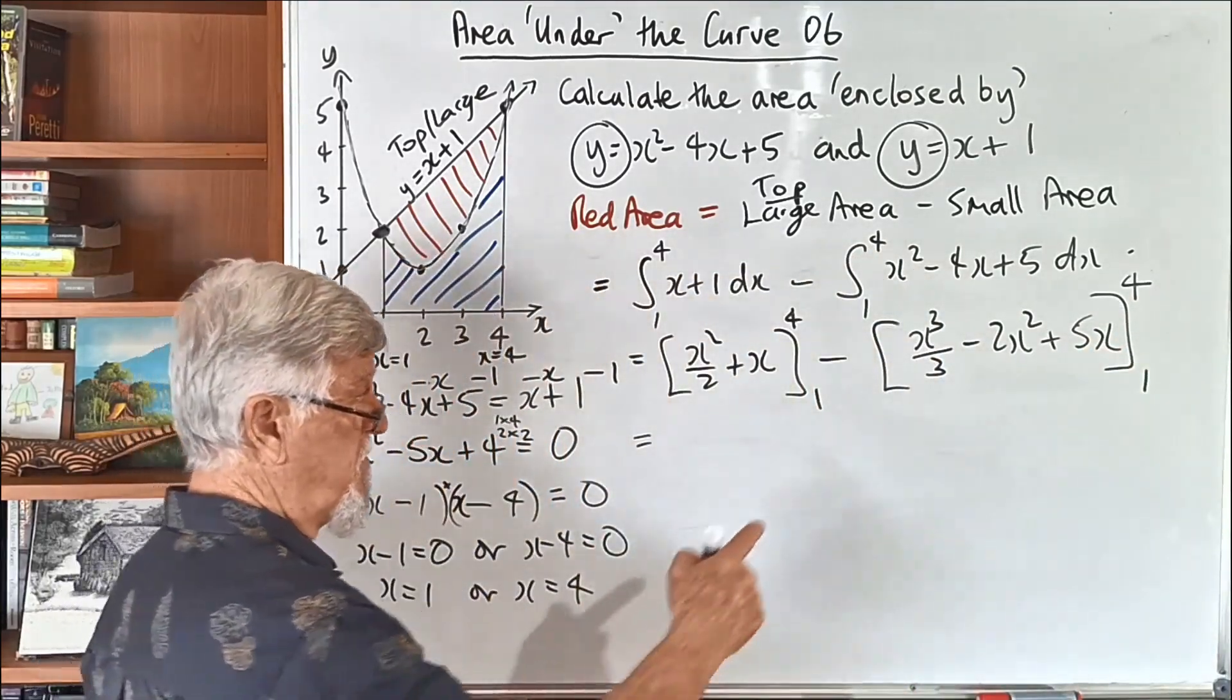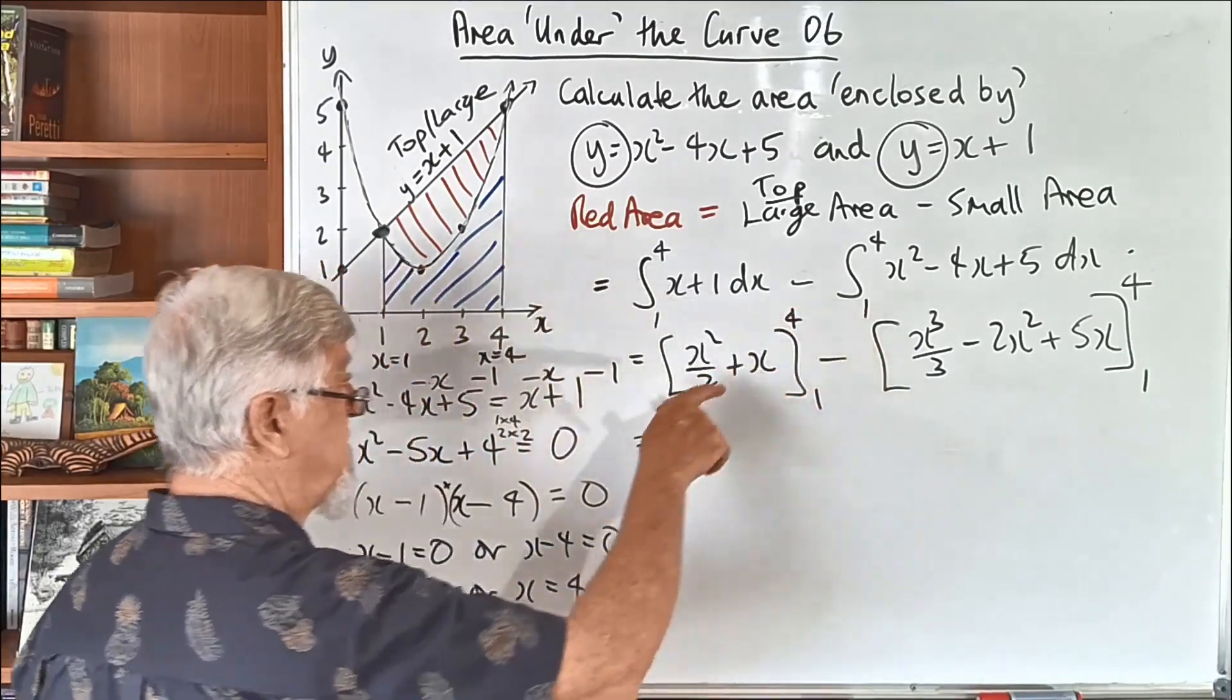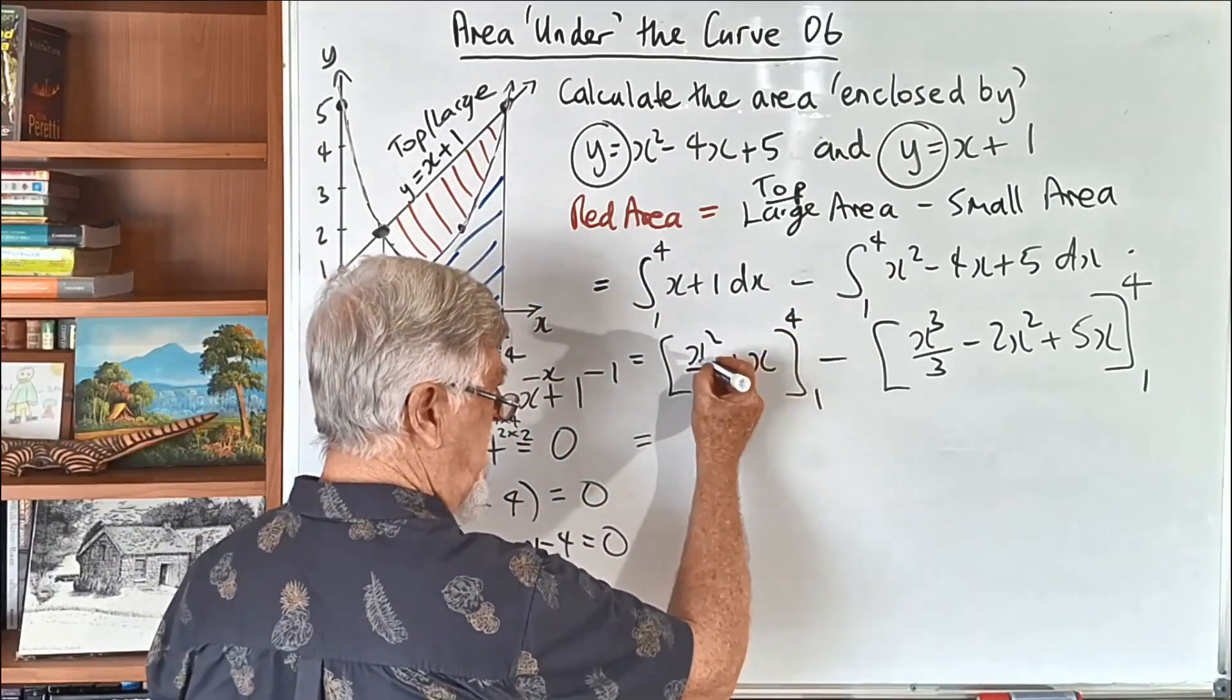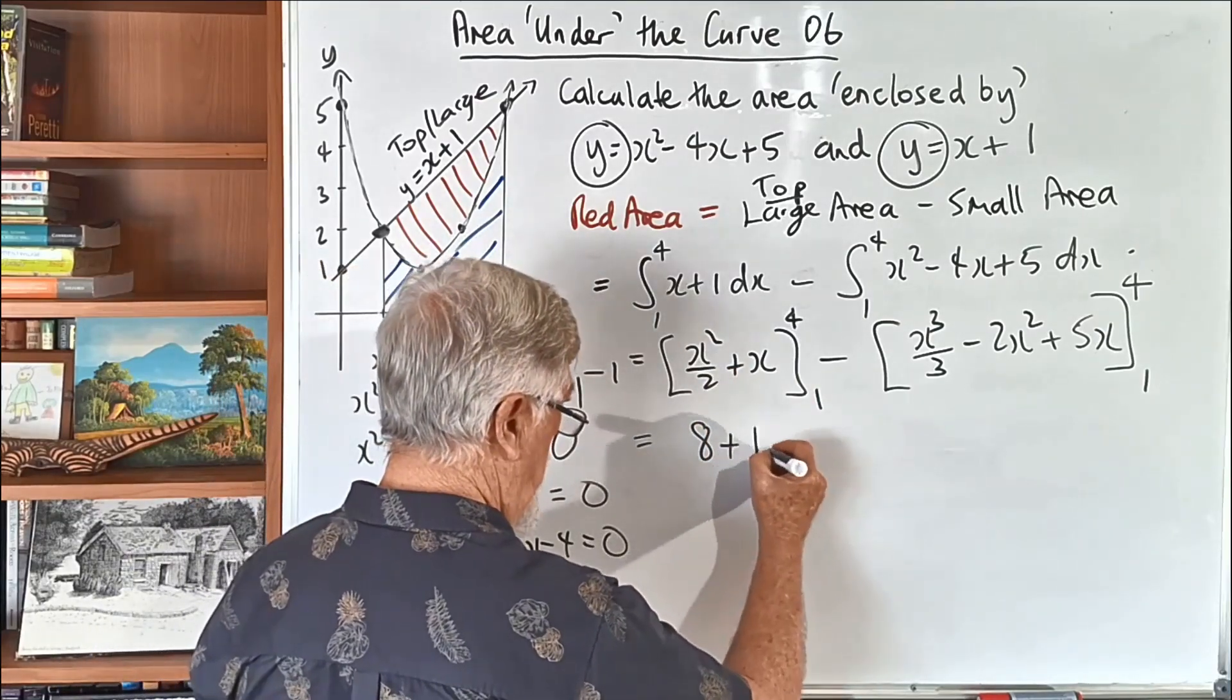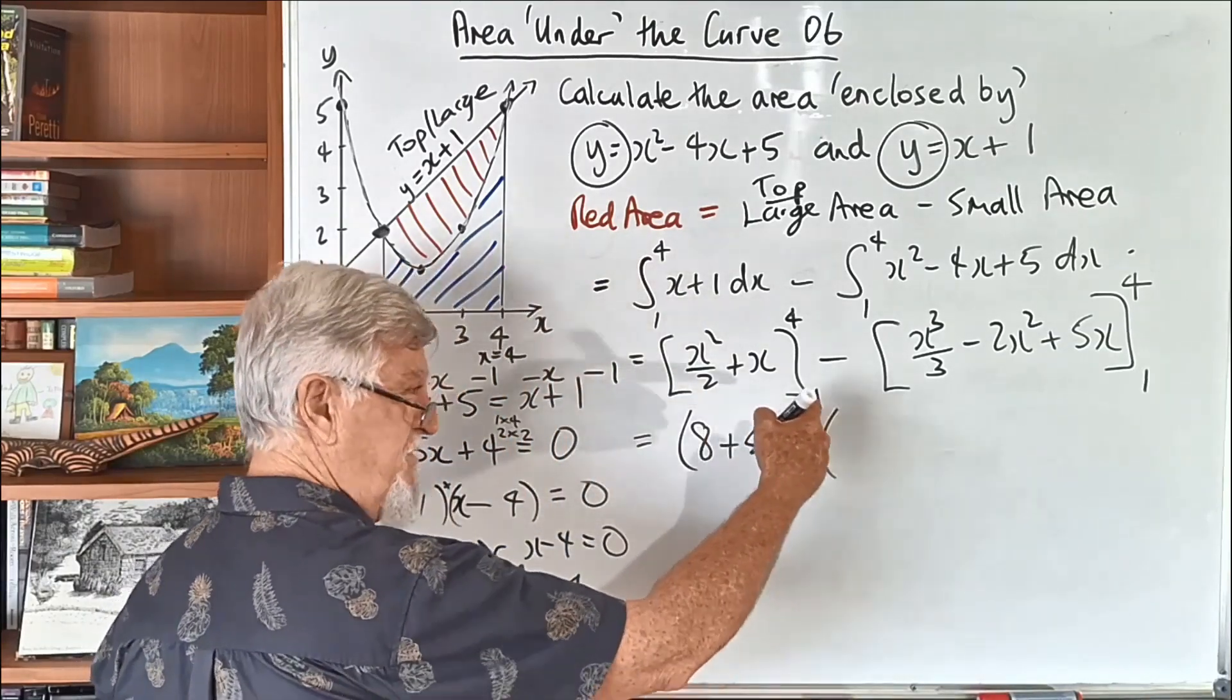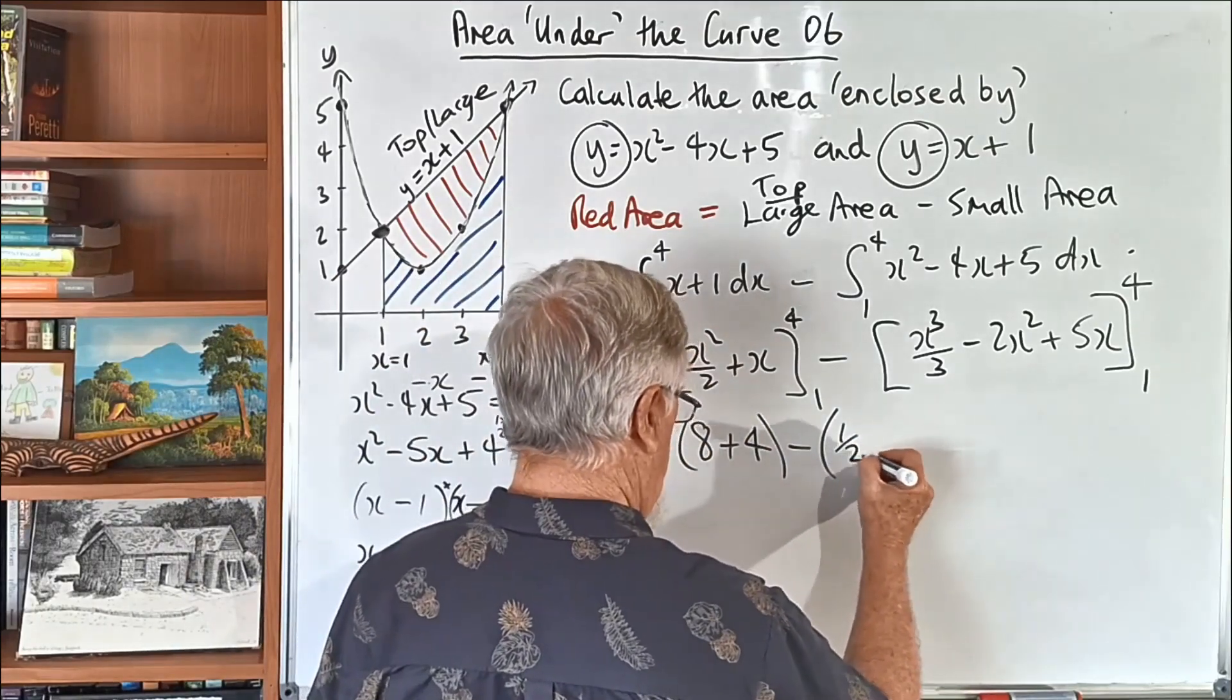So, we're also going from 1 to 4. Now, substitute first the top value, and then the bottom value. So, the top value, which is actually the value furthest to the right. So, furthest to the right, so that's 4, 4 is a 16 on 2. And the shortcut, 8. 4, 4 is a 16 on 2 plus 4. Then we have to subtract, substituting 1, sorry. 1 squared on 2 is a half plus a 1.